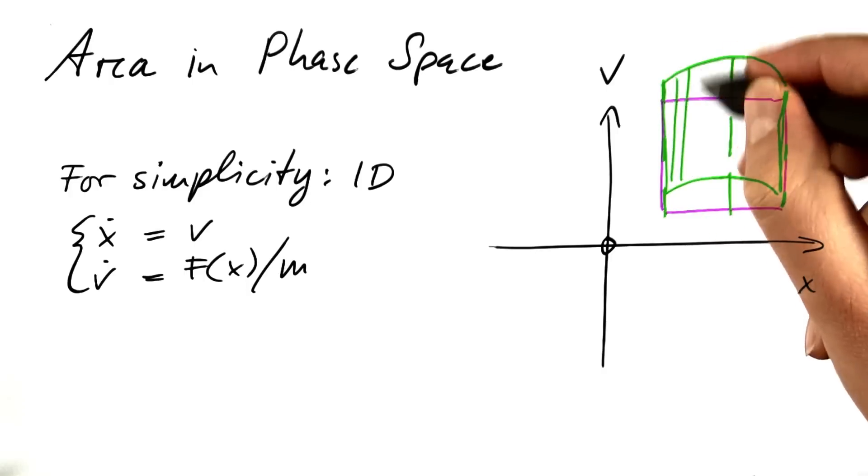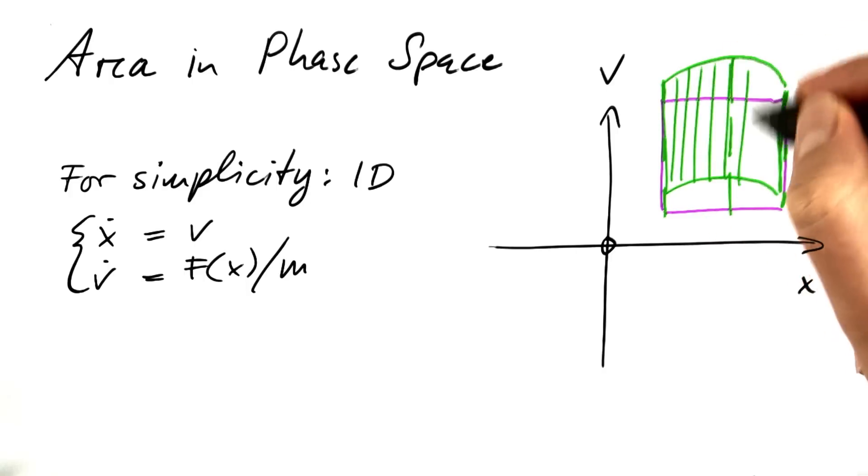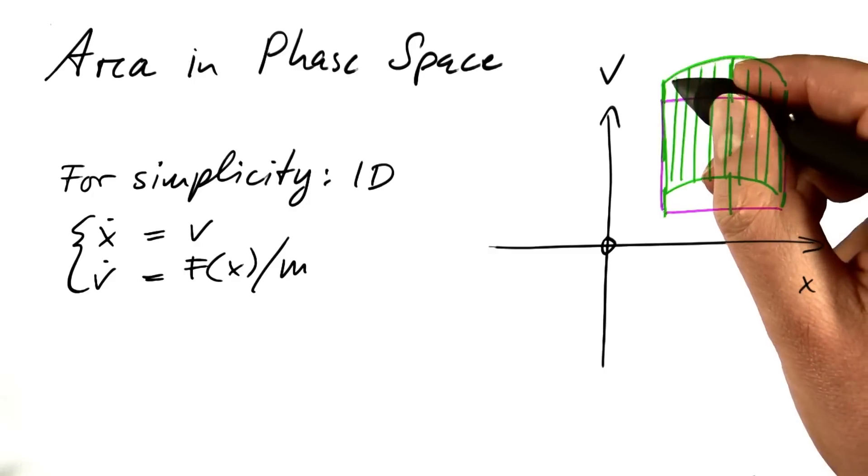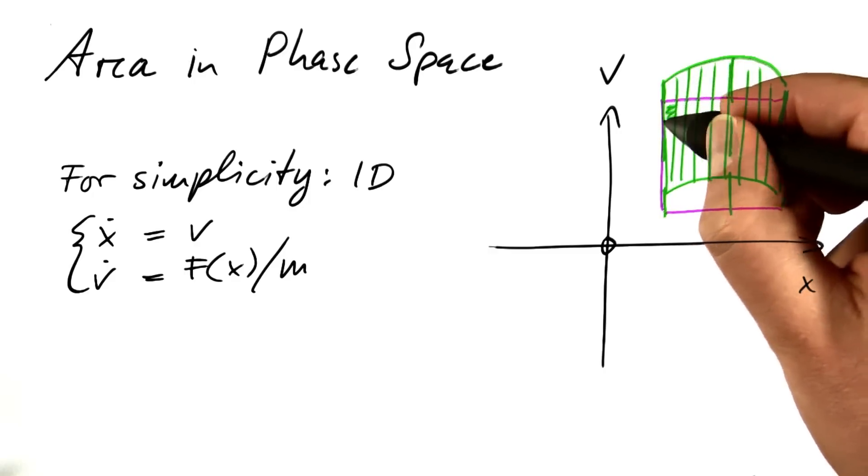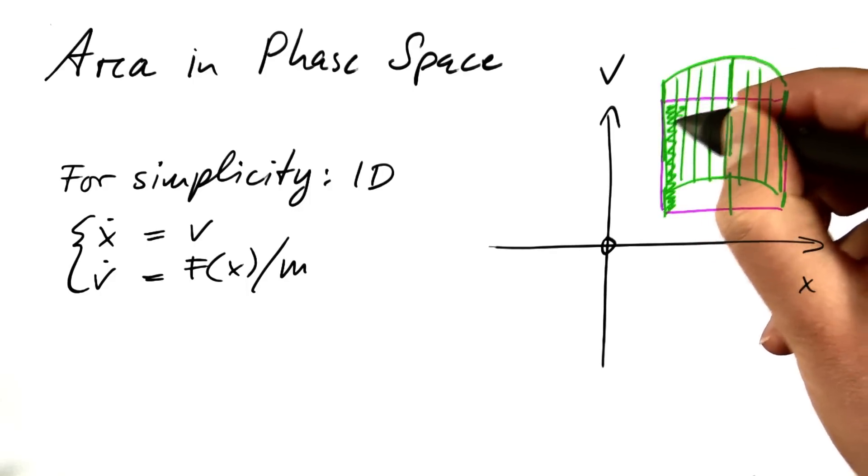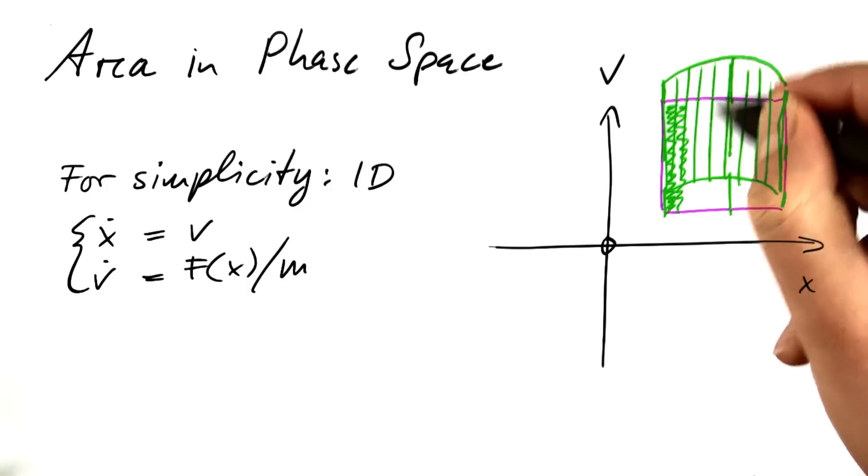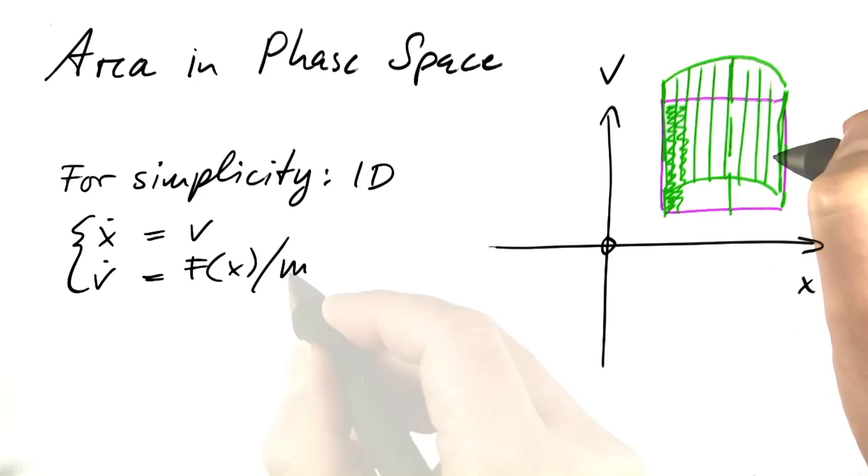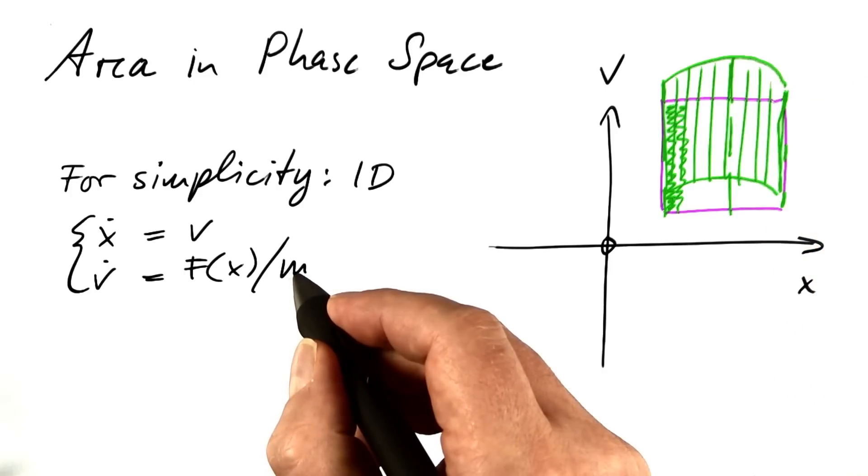And that still has the same area as the original purple rectangle had. To see that, simply take this slice and push it down, and take this slice and push it down, and so on. So, each equation alone would not change the area.